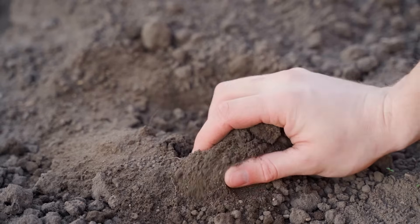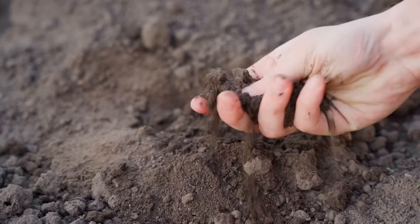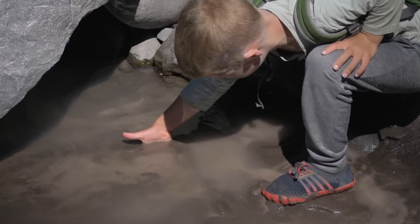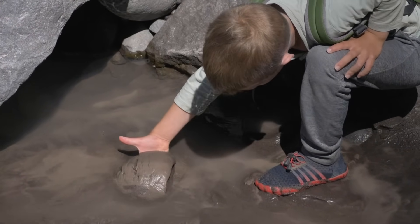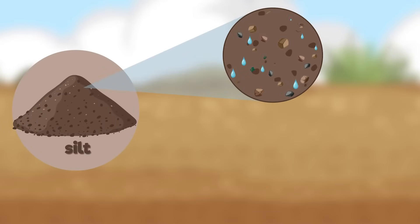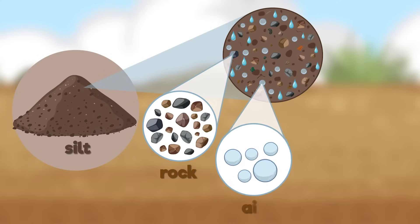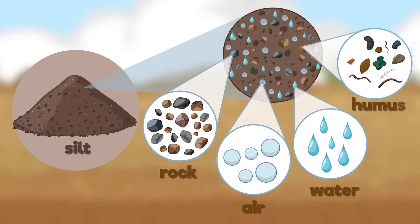Silt has qualities that sit between those of sand and clay. Silt particles are finer than sand but bigger than clay, making silt smooth to the touch. This medium-sized particle composition allows silt to hold water more than sand. Silt also has some humus, which provides minerals and nutrients for plants.